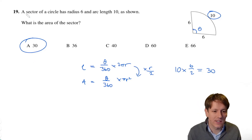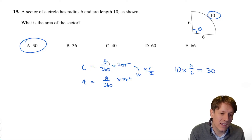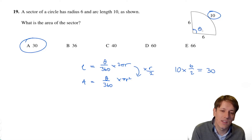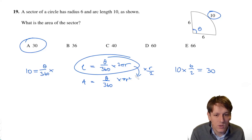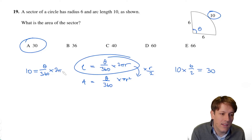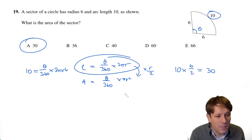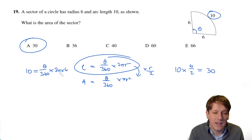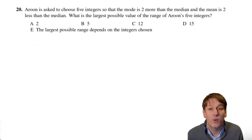You could do it the longer way by solving 10 = (θ/360) × 2π × 6 for θ — the numbers work out because 6 and 360 have nice factors — but the super-fast method of multiplying the arc length by r/2 is far better here.